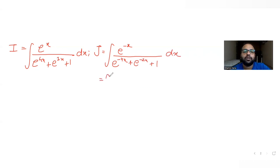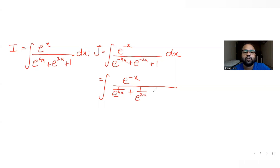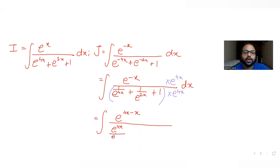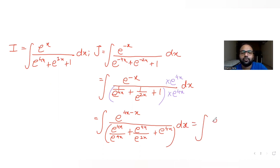Simplifying J further, I can write the denominator: e raised to minus 4x becomes 1 upon e raised to 4x, e raised to minus 2x becomes 1 upon e raised to 2x, plus 1. Now we'll multiply throughout the numerator and denominator by e raised to 4x. So multiplying numerator and denominator by e raised to 4x, e raised to 4x times e raised to minus x gives e raised to 3x.